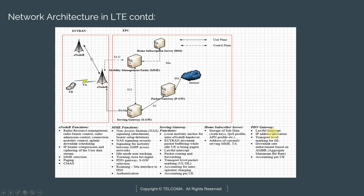The PDN Gateway also supports lawful intercept — traffic can be sniffed right here. It handles IP address allocation, transport level marking for downlink, and downlink rate enforcement based on AMBR — Aggregate Maximum Bit Rate. You can enforce different data speed policies for subscribers at the P-Gateway. Billing information can also be collected here; depending on your network, you may decide to do it either at the P-Gateway or at the SGW.